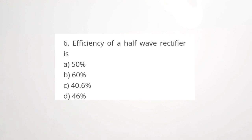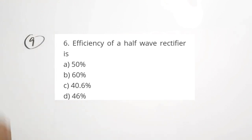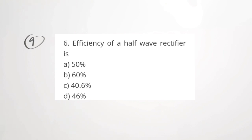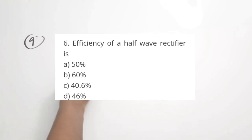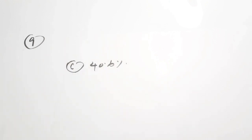Ninth question is a theoretical question from the rectifier session. The efficiency of a half wave rectifier is blank. Efficiency is V_out / V_in × 100%. The efficiency of a half wave rectifier is 40.6%. This is a value you should know by heart. For rectifiers, the ripple factor and efficiency can come as theoretical questions — you should know these values for half wave, full wave, and bridge rectifiers. The correct answer is option C, 40.6%.